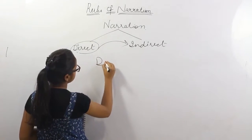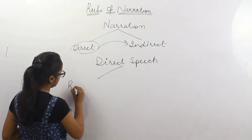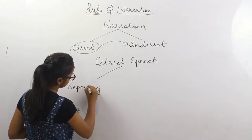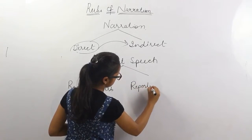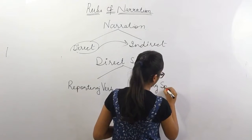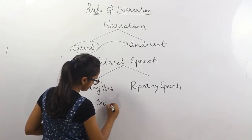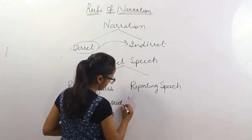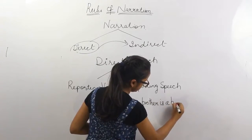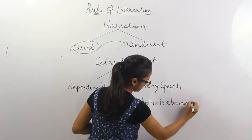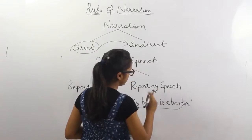A direct speech has two parts. First, the reporting verb, and then the reporting speech. So this part of the sentence is called the reporting verb, and this part of the sentence is called the reporting speech.